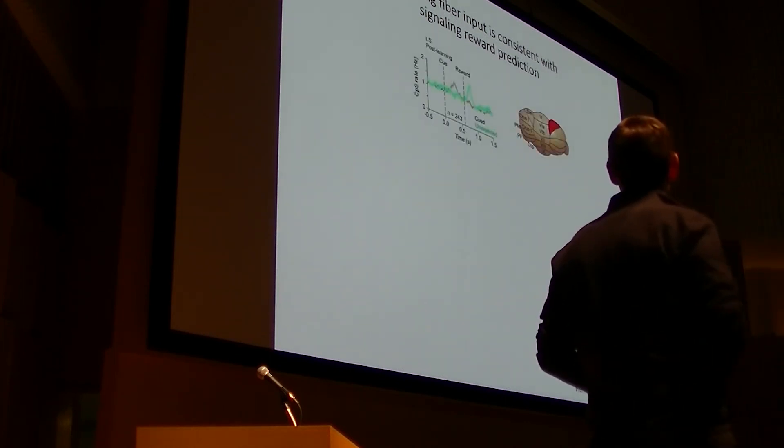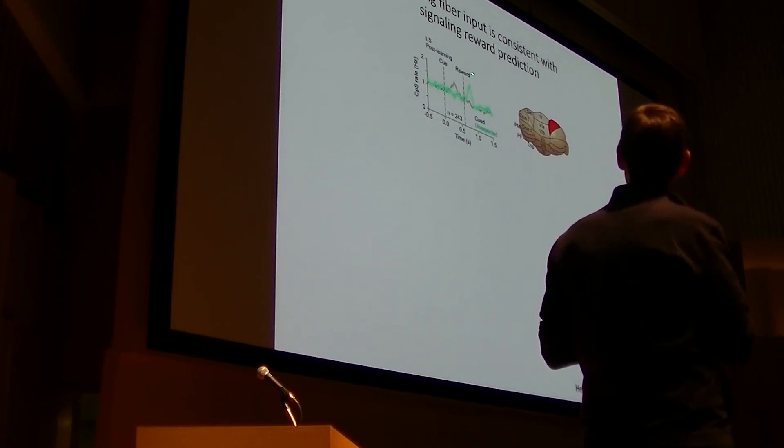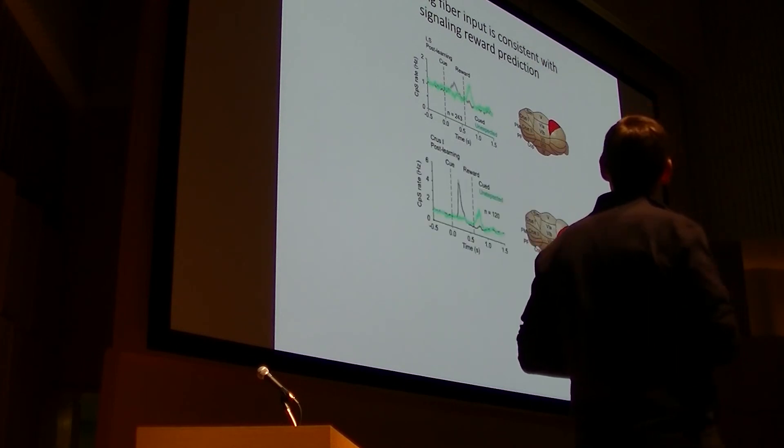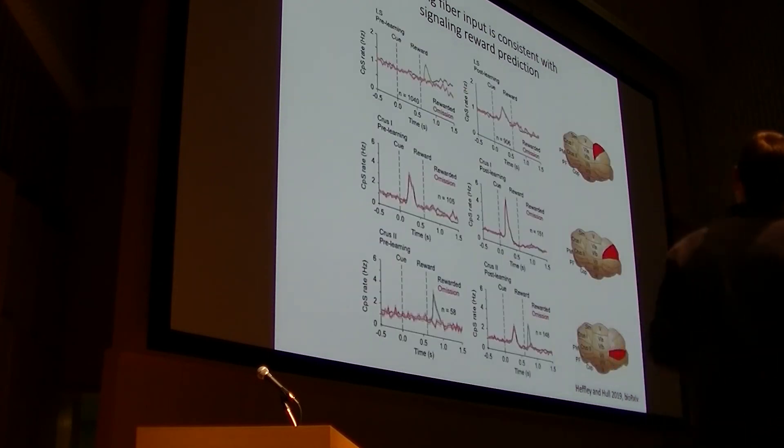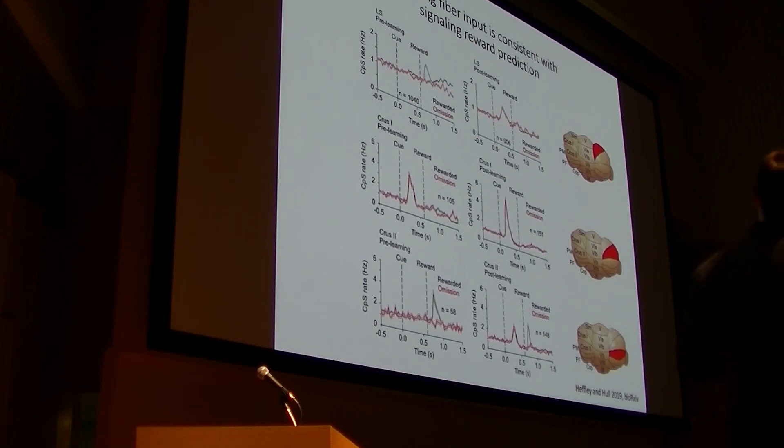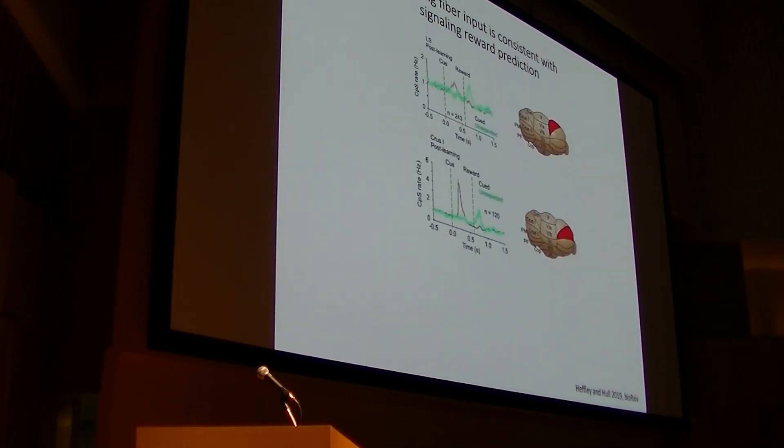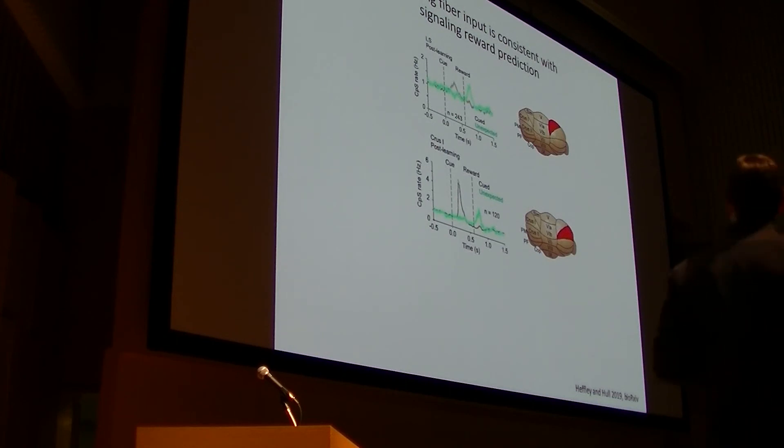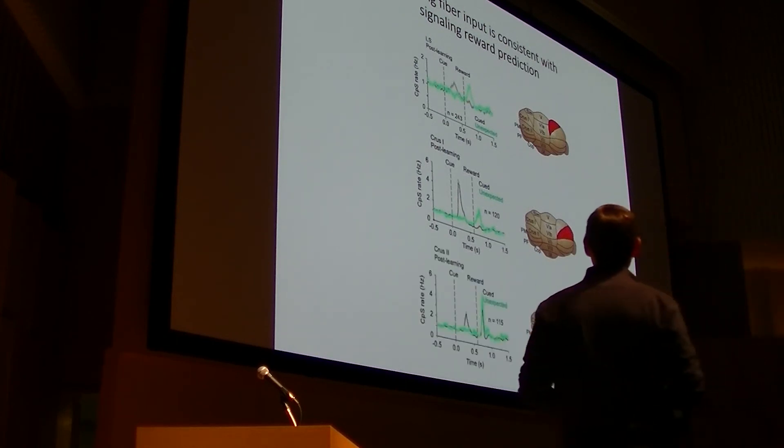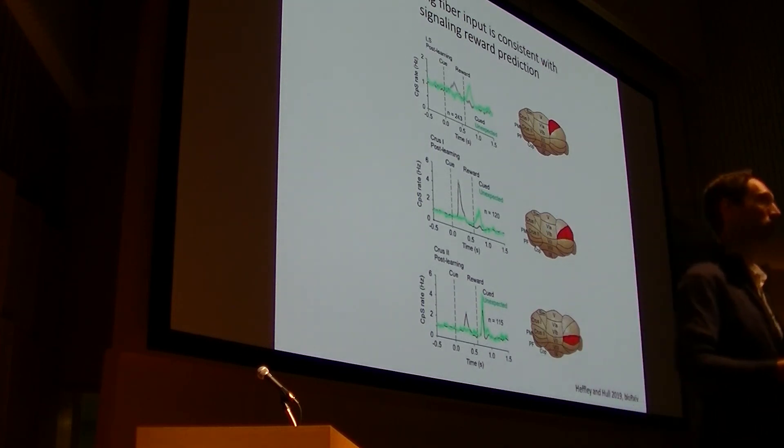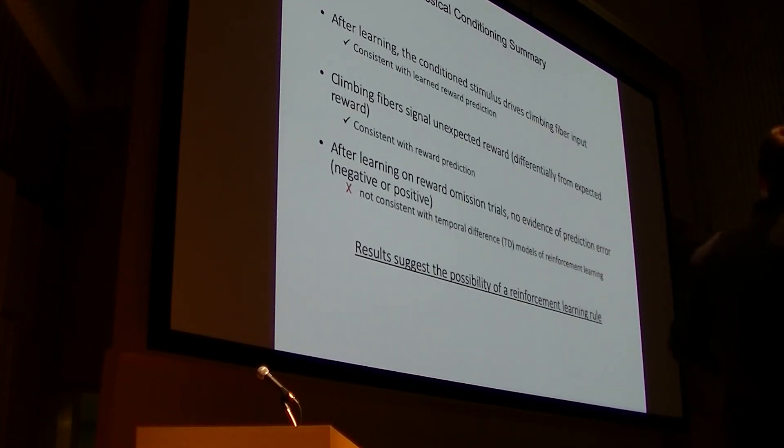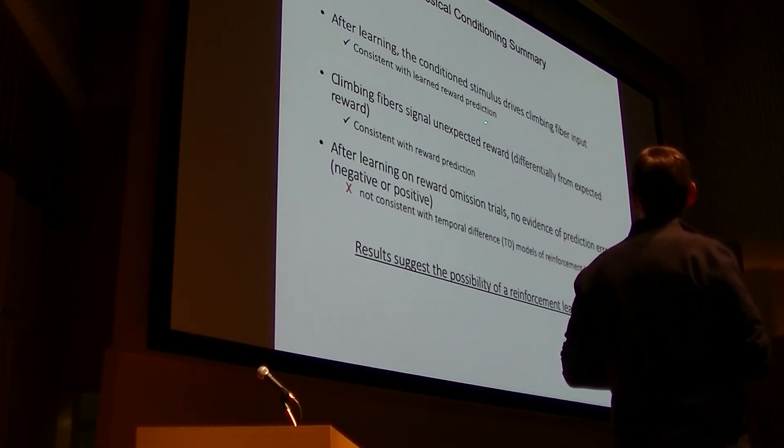We also looked at unexpected reward after learning. You can see that there's an enhanced unexpected reward response in lobule simplex. In Crus 1, there's an enhanced response to unexpected reward. This was incredibly surprising to us to see this in the learned condition. I say that because if I just go back one slide here, there was no response in naive animals to unexpected reward, nor to expected reward in trained animals. Only after the animal has learned that reward should necessarily be predicted by this visual cue do you see responses when it's delivered unexpectedly. And in Crus 2, where the reward response is maintained, you now see that it is enhanced if that reward was not expected.